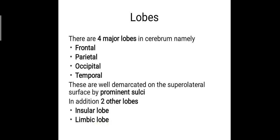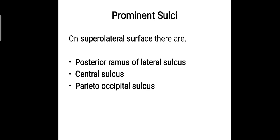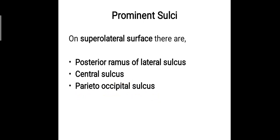Let's see how these lobes are demarcated. The prominent sulci present on the superolateral surface are the posterior ramus of the lateral sulcus, the central sulcus, and the parieto-occipital sulcus. These are the three prominent sulci which separate the lobes.